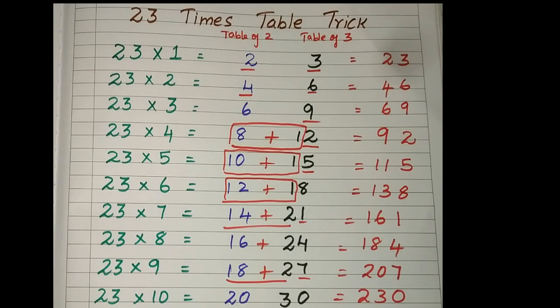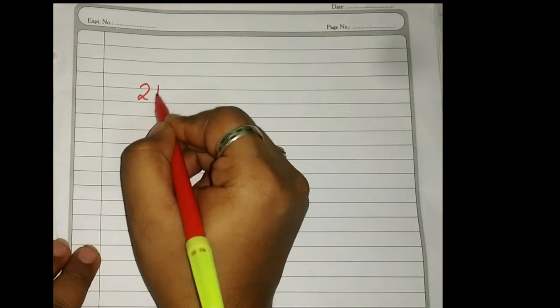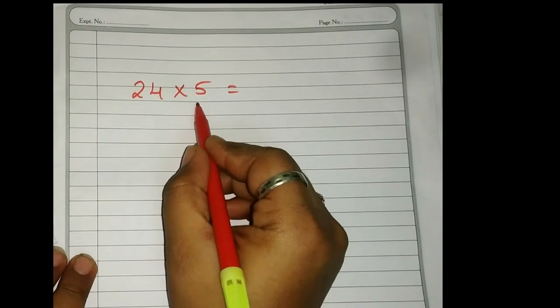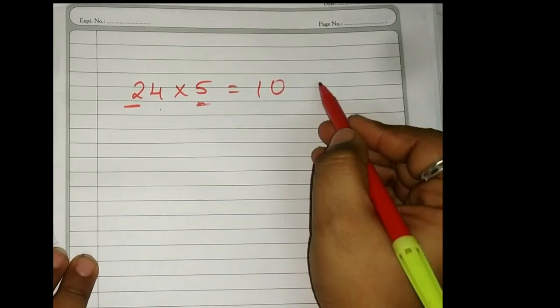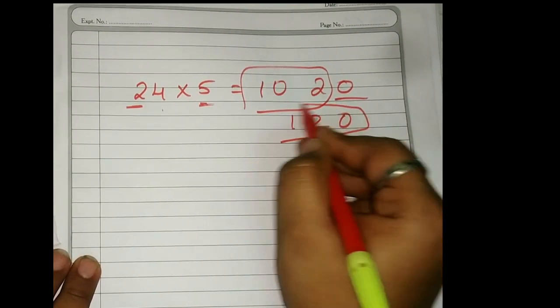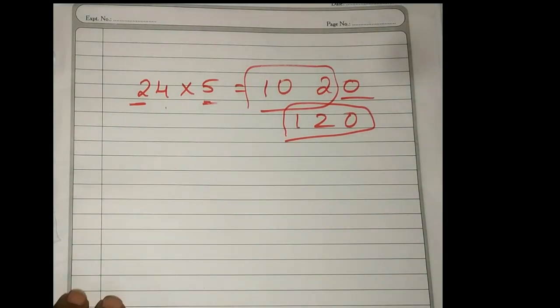Yes, we'll move on to this. If I have given 24 times 5, immediately in your mind it should strike: what is 5 twos are? 10. What is 5 fours are? 20. So 0, 10 plus 1, 10 plus 2, it is 12. 120. Immediately you can answer like that if you started practicing.